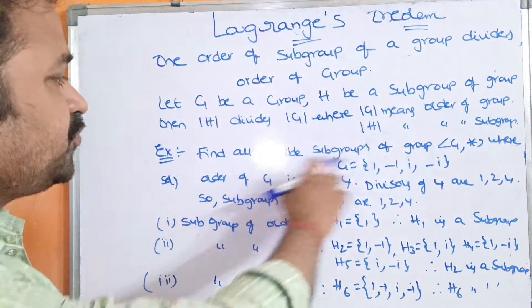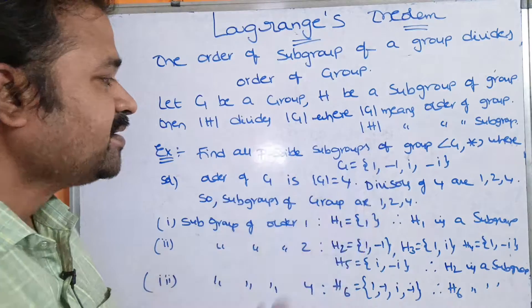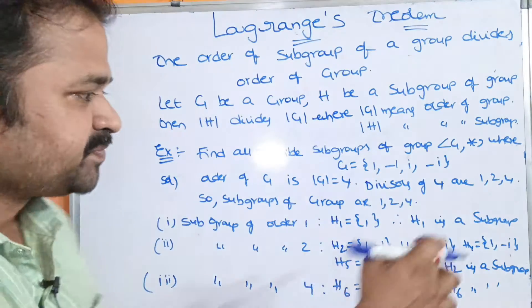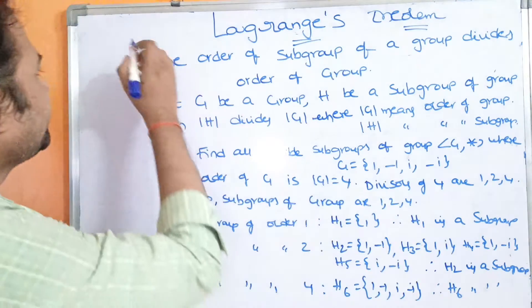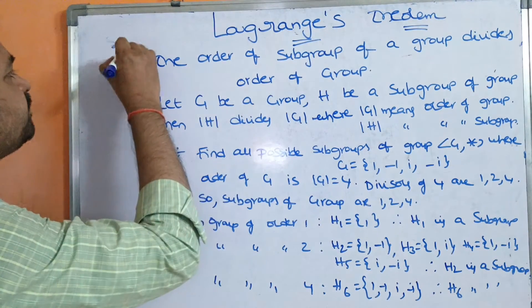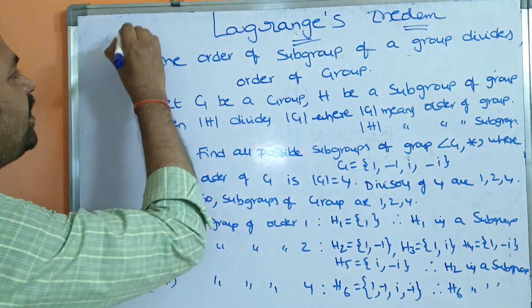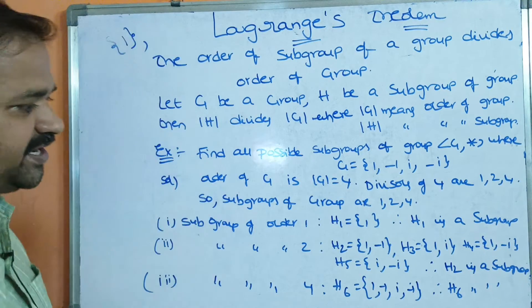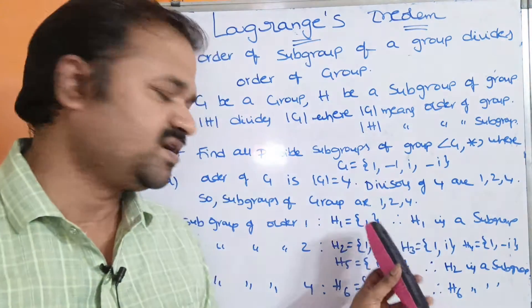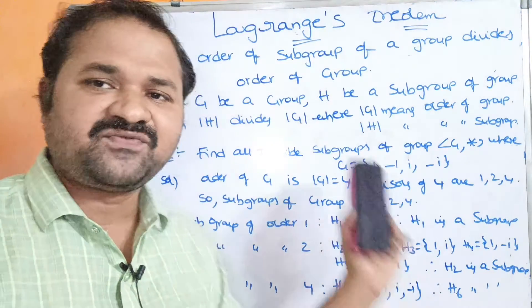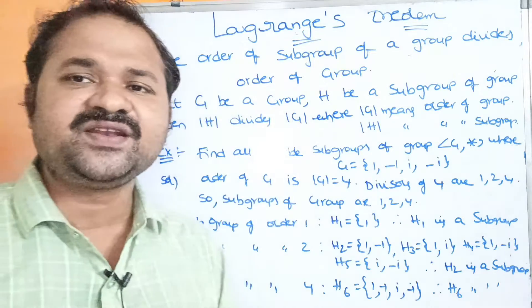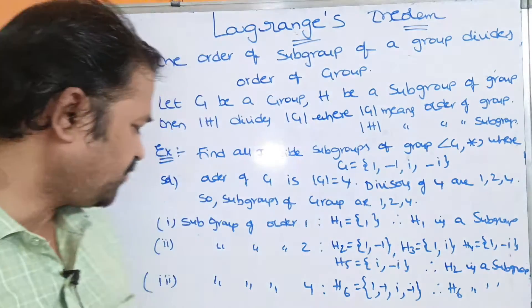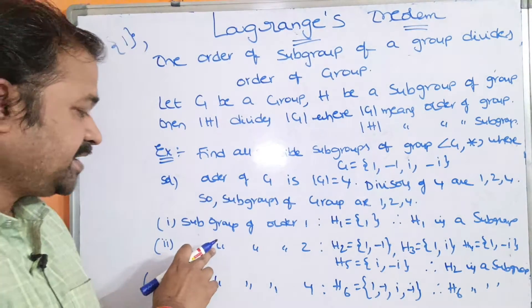We have to find all possible subgroups. On order 1, we have one subgroup: {1}. We could also take -1, i, or -i as a single-element subgroup.